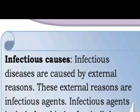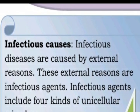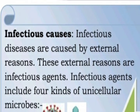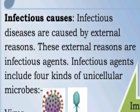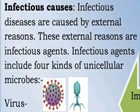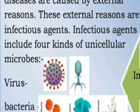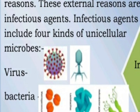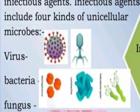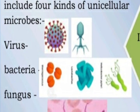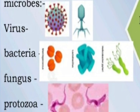Question number two: Why do we say that infectious diseases are caused by external reasons? Give an example. Infectious diseases are caused by external reasons — these external reasons are infectious agents. Infectious agents include four kinds of unicellular microbes: virus, bacteria, fungus, and protozoa. That is why we say that infectious diseases are caused by external reasons.